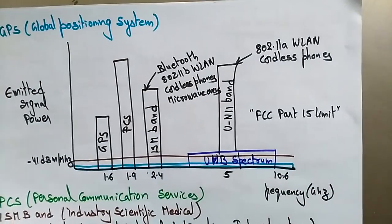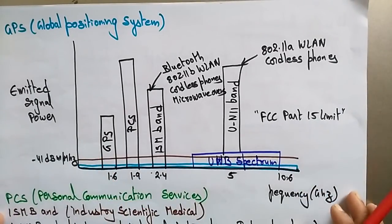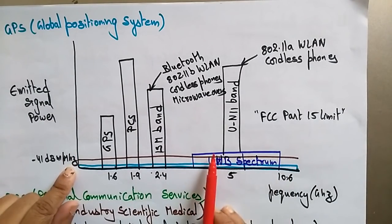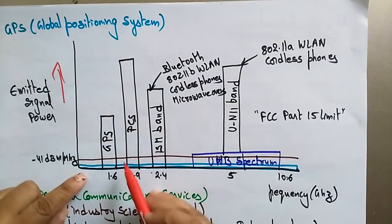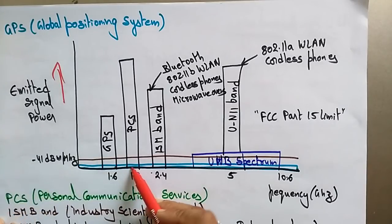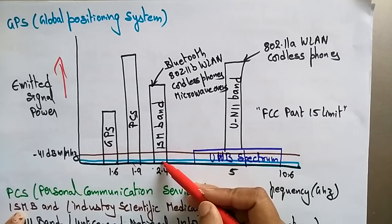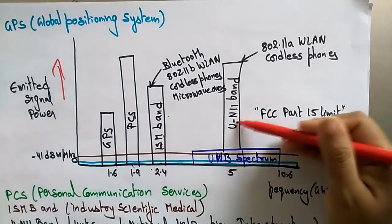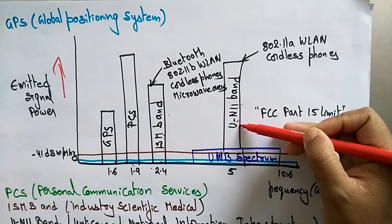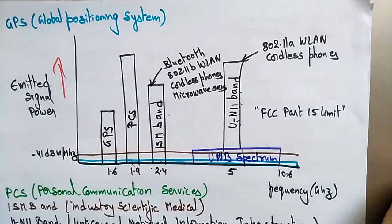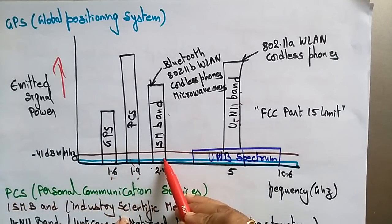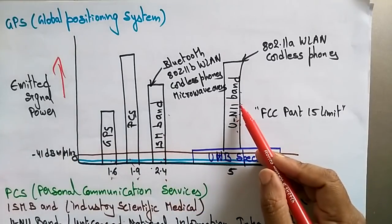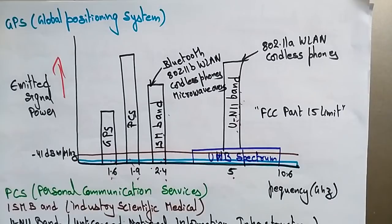Here you can see a graph for UWB. The x-axis is the frequency and the y-axis is the emitted signal power. The bands shown include GPS at 1.6 GHz, Personal Communication Services (PCS) at 1.9 GHz, the ISM band — Industrial, Scientific and Medical — at 2.4 GHz, and the UNII band — Unlicensed National Information Infrastructure — at 5 GHz. The UWB spectrum is also present spanning across this range.